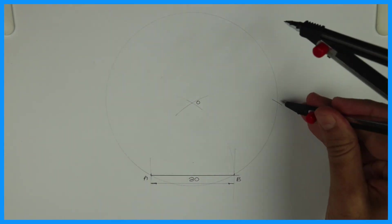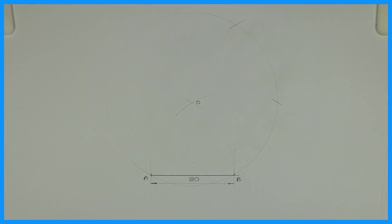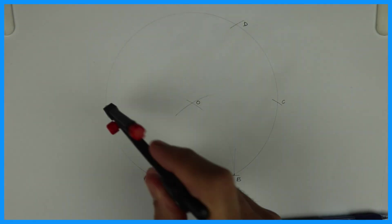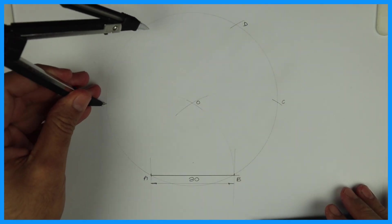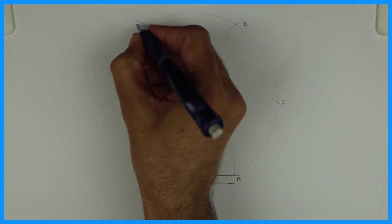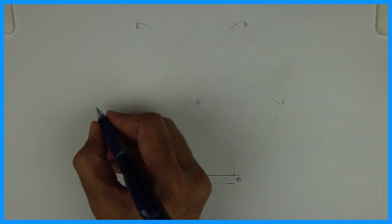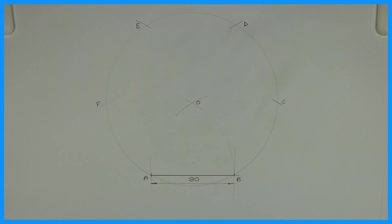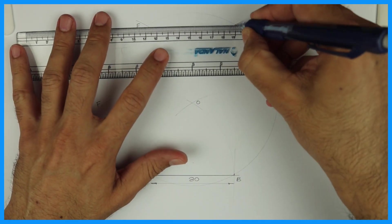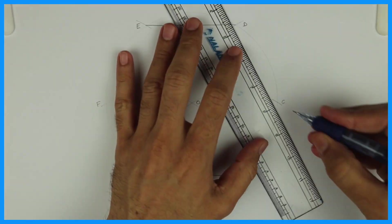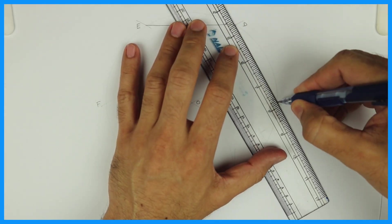Then take AB, cut on the right side like this, you'll get C and D. Cut on the left side, you'll get E and F. So you'll get six points. Join all those points, you will get the hexagon.